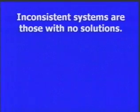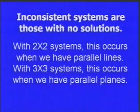Inconsistent systems have no solutions. With a 2x2 system, this occurs when we have parallel lines. With 3x3 systems, this occurs when we have parallel planes. The good news is these are relatively easy to spot.